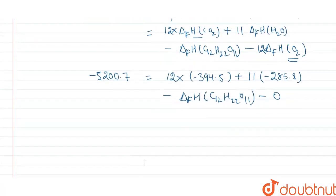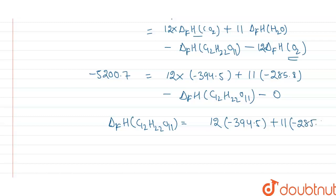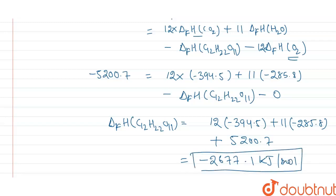From here, the enthalpy of formation of sucrose C12H22O11 can be written as 12 times enthalpy of formation of CO2, plus 11 times enthalpy of formation of water, plus 5200.7. By calculating this value, we get the enthalpy of formation of sucrose equal to minus 2677.1 kJ/mol. This is the required value of enthalpy of formation of sucrose. I hope you understand, thank you.